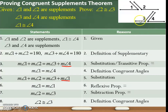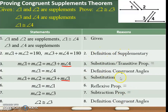So basically these two are congruent. In order to prove, you need to have reasons, and you need to use properties, and you need to write definitions — which are given to you on the paper.